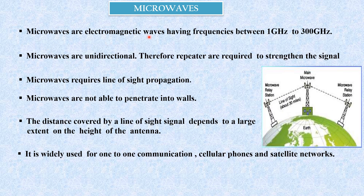Microwaves are electromagnetic waves having frequency between 1 GHz to 300 GHz. Microwaves are unidirectional — unlike radio waves — and therefore repeaters are required to strengthen the signals. Microwaves require line-of-sight propagation as they travel only in a straight line from the source, so the antennas should be in line of sight. Microwaves are not able to penetrate walls. The distance covered by line of sight depends largely on the height of the antenna. Microwaves are widely used for one-to-one communication, cellular phones, and satellite networks.